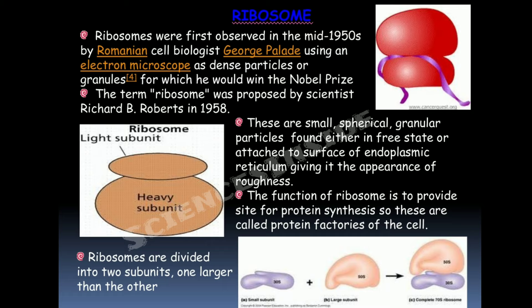Ribosomes are small spherical granular particles found either in a free state or attached to the surface of the endoplasmic reticulum, giving it the appearance of roughness — which is why endoplasmic reticulum is categorized into smooth and rough types. The function of ribosomes is to provide a site for protein synthesis, so they are also called the protein factories of the cell. They are divided into two subunits: a larger one and a smaller one.